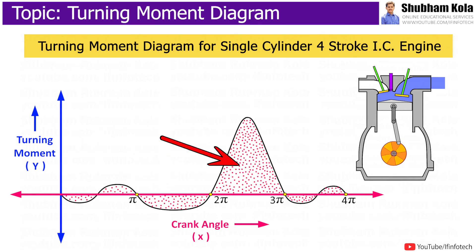The area of Turning Moment Diagram represents work done during the cycle because work done is the product of turning moment and crank angle.